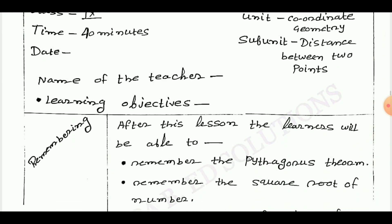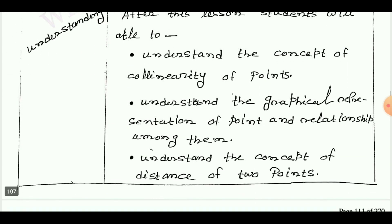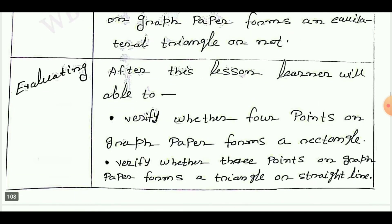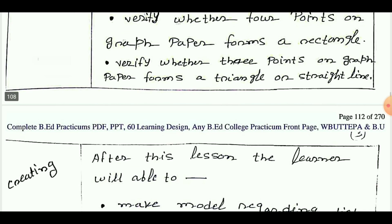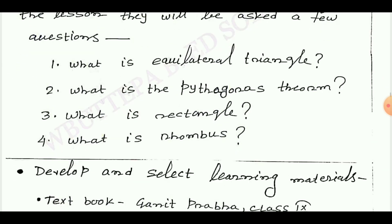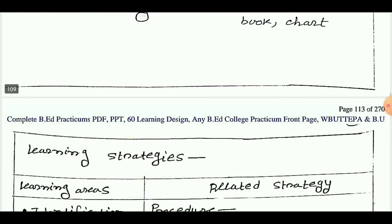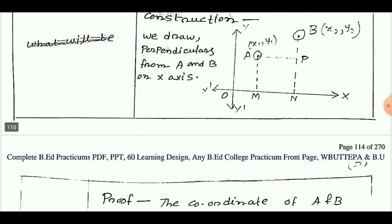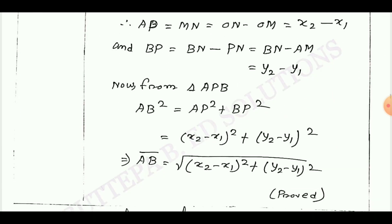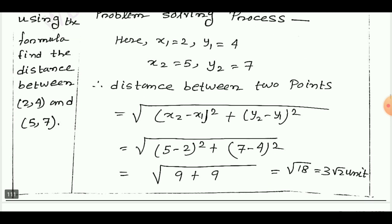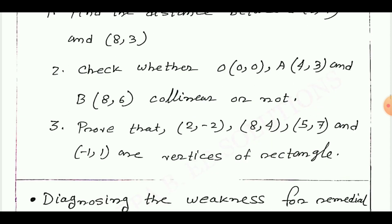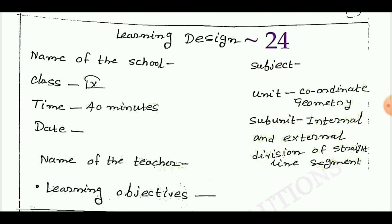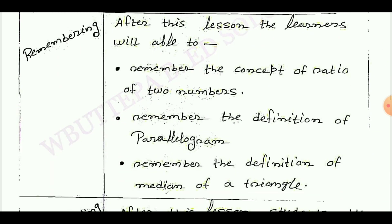Learning design number 23. Objectives are shown: analyzing, evaluating, creating. Learning strategy is presented. Last point: diagnosing the weakness, and learning strategy.